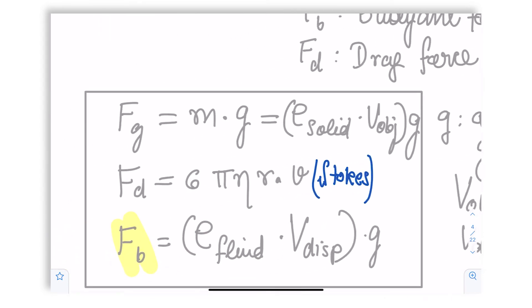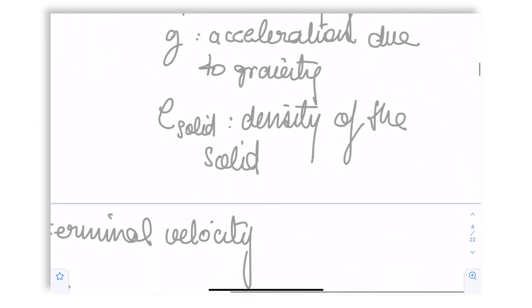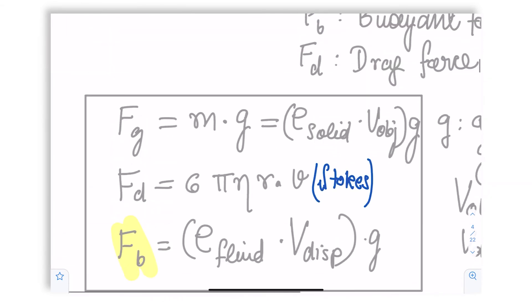So the gravitational force is just simply F is equal to mg. m is your mass, mass of the object, and g is the gravitational acceleration. Mass itself, as you recall, can be written in terms of the density times the volume. So you have this first term Fg is the product of the density of the solid, the volume of the object, and the gravitational acceleration.